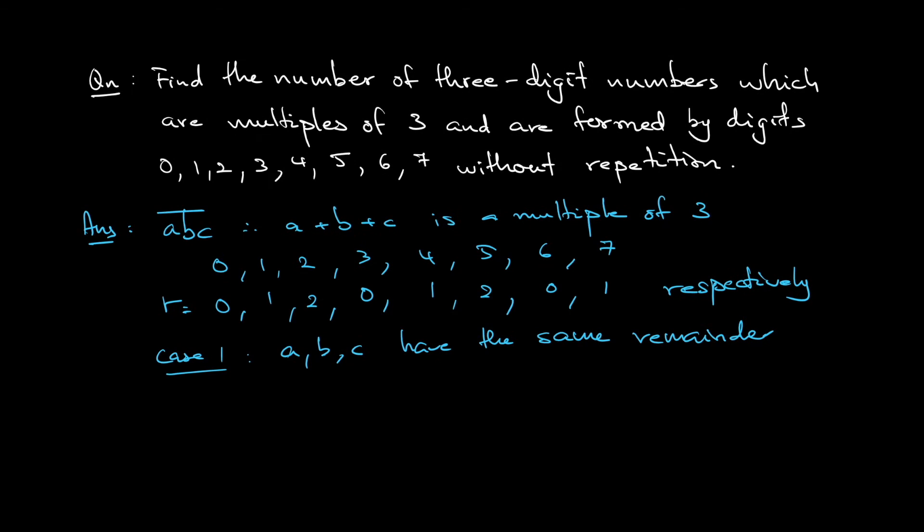So how many such cases are there? First thing first, because there is no repetition, to get a remainder 0 you can only have 0, 3, and 6. These are the remainder 0. Remainder 1 is the 1, 4, and 7. Notice you cannot have a, b, c all remainder 2 because you only have number 2, 5, and you do not have an 8.